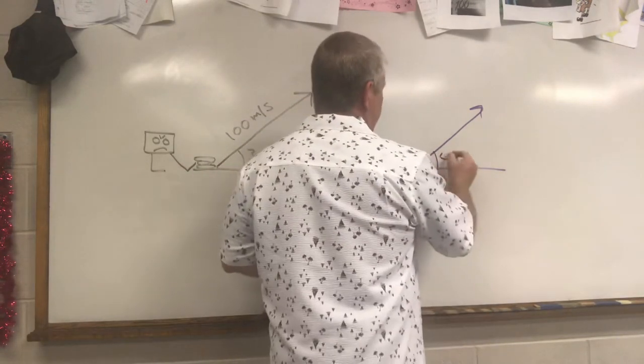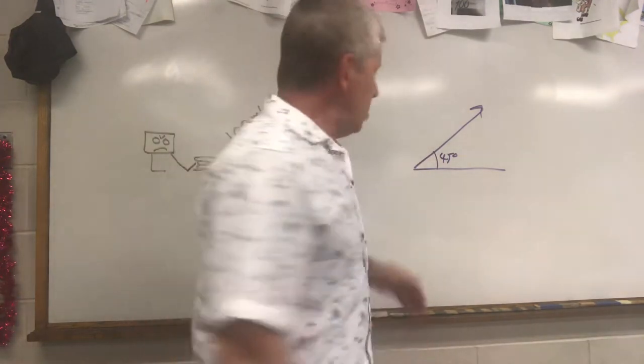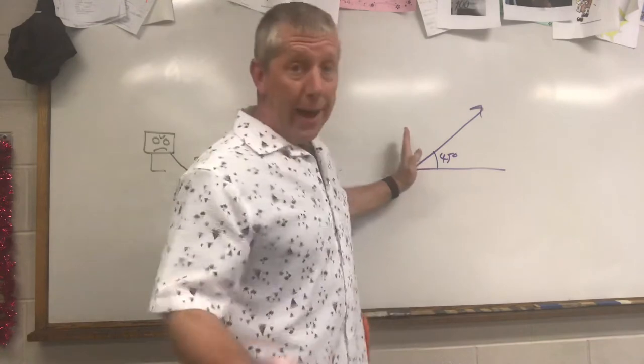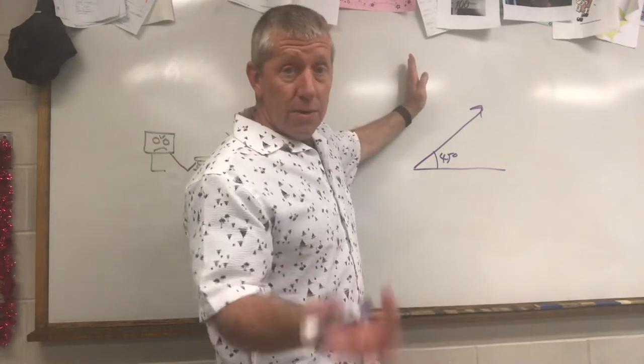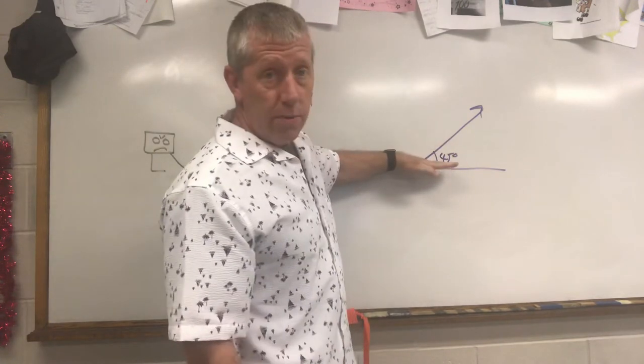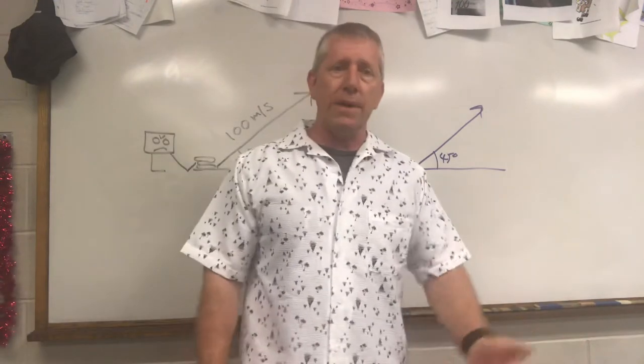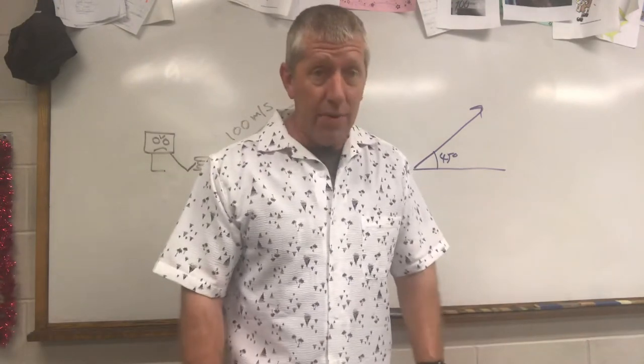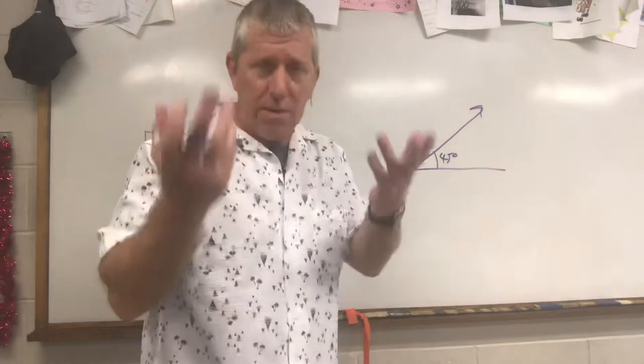45 degrees is halfway between 0 and 90. You know that if you launch something at 90 degrees straight up, it's not going to go anywhere forward. So clearly, that ain't going to work. And if you launch something at zero, right along the ground, it's going to immediately hit the ground. So halfway in between 0 and 90 is 45. That makes some logical sense.